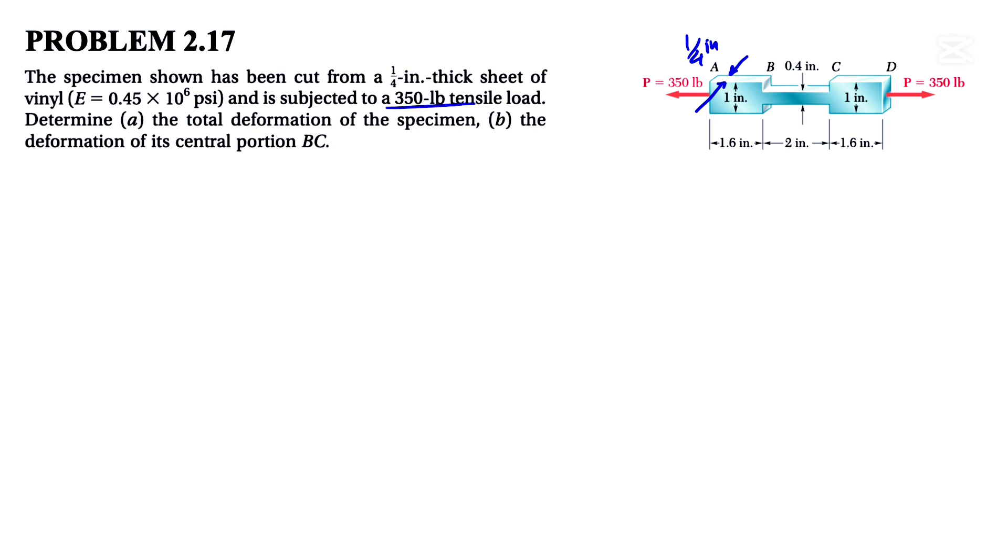So we have a force in this part. In the A part of the question we need to determine the total deformation of the specimen, and in the B part the deformation of the central portion BC. What we're going to do here is break it down into three different parts because at the end we can find the deformation for each part. The answer for the B part would be what we find for the BC part, but in order to find the total deformation we have to find the deformation for AB, BC, and CD, and at the end we're going to add all of them together to get the total deformation.